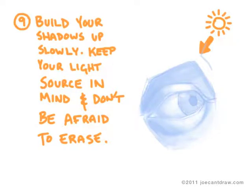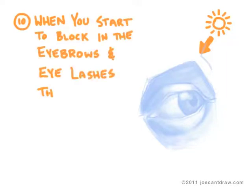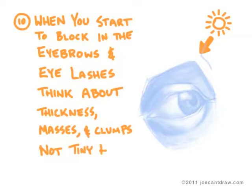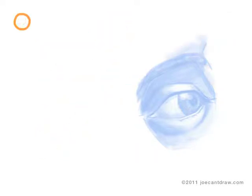Here we're building up the mid-tone drawing and avoiding getting too fixated on any one detail. When you start to block in the eyebrows and eyelashes, think about them in terms of thickness, masses, and clumps, and don't get focused on tiny, intricate hairs.